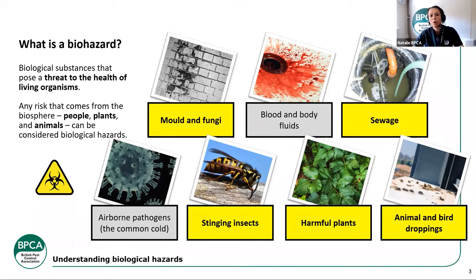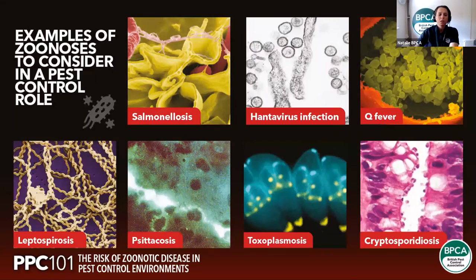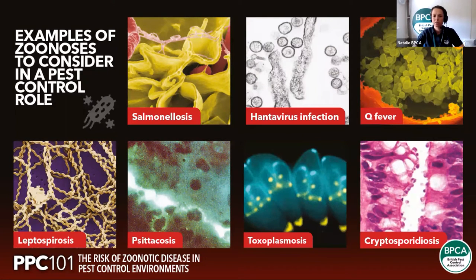So that's what a biohazard is - anything that's a threat to the health of living organisms, and in terms of where it comes from, it's the biosphere: the earth and atmosphere around us, the people, plants, and animals - the living things within that biosphere. Anything that can be contracted. Now let's talk about zoonosis. Of course that is a factor as well.